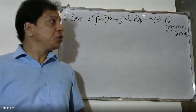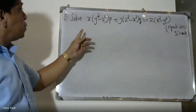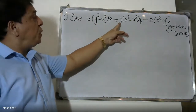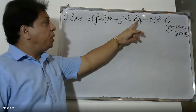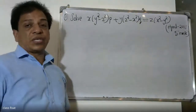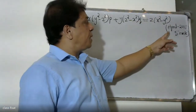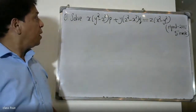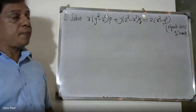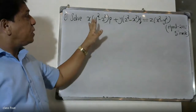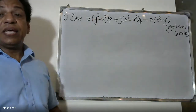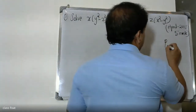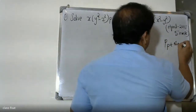Good morning students. The university question is: x(y² - z²)p + y(z² - x²)q = z(x² - y²). This is a Lagrange's linear equation. The formula is Pp + Qq = R for first order Lagrange's linear equation.